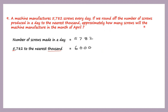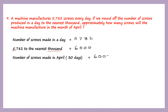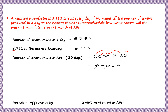Now, how many screws will the machine manufacture in the month of April? April has 30 days, so number of screws made in April is 6,000 multiplied by 30. Whenever you have numbers ending in zeros, the multiplication becomes easy: just multiply 6 by 3, which gives 18, then count the zeros — we have 4 zeros — giving 1,80,000. So approximately 1,80,000 screws were made in April.